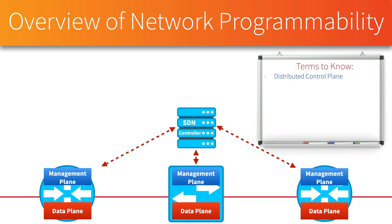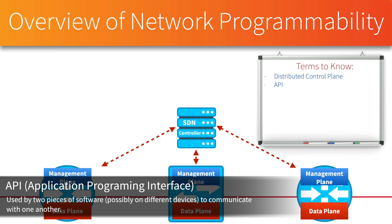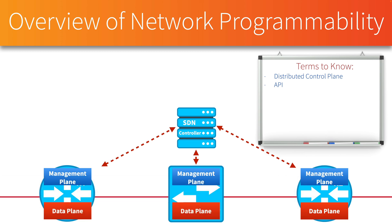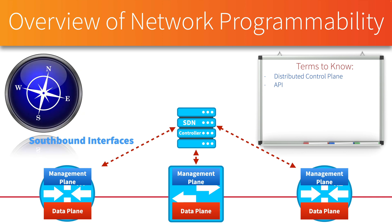That brings up the question: how does a device like a router know how to forward packets if its control plane is no longer on the router? That SDN controller is going to be communicating down to those devices using something called an API — an Application Programming Interface. An API is basically the way one piece of software talks to another. In the SDN world, the APIs that run between the controller and the devices being controlled are often referred to as southbound APIs, or SBIs. The reason is that the devices being controlled are drawn below the SDN controller. We no longer have a distributed control plane — we now have a centralized control plane.